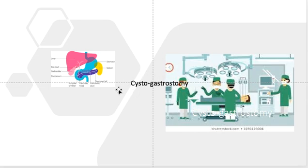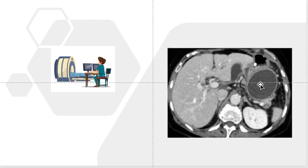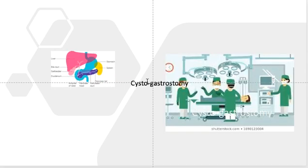The gold standard for a pseudocyst is to do a cystogastrostomy — that is, to drain the cyst into the stomach. The reason is anatomical: the pancreas is behind the stomach. Behind the stomach is the lesser sac, and the pancreas sits in the posterior part of the lesser sac. As shown on the CT, the cyst bulges into the stomach, so you make an opening and drain the cyst into the stomach. Traditionally, this was done by laparotomy.